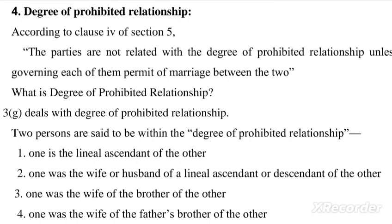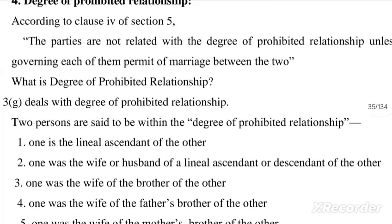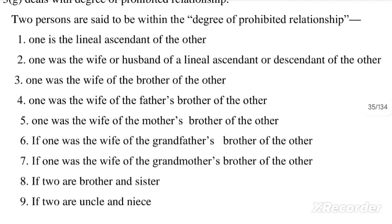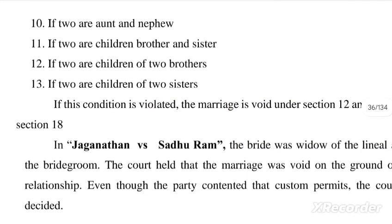Two persons are said to be within the degree of prohibited relationship if: one is a linear ascendant of the other; one was the wife or husband of a linear ascendant or descendant of the other; one was the wife of the brother of the other; one was the wife of the father's brother of the other; one was the wife of the mother's brother of the other; one was the wife of the grandfather's brother of the other; one was the wife of the grandmother's brother of the other; the two are brother and sister; the two are uncle and niece; the two are aunt and nephew; the two were children of brother and sister; the two were children of two brothers; or the two were children of two sisters.